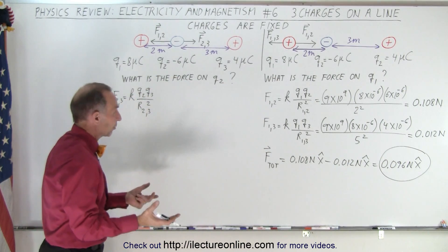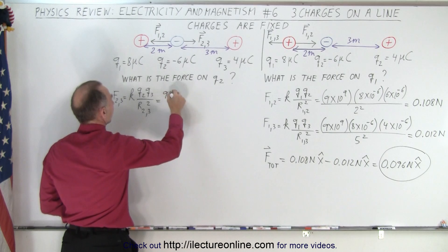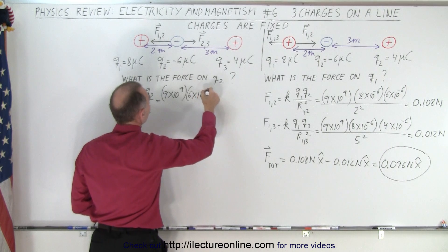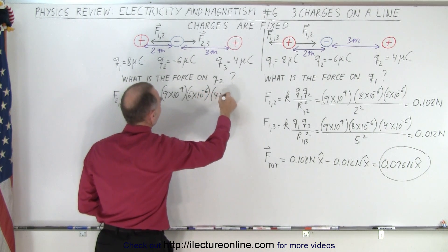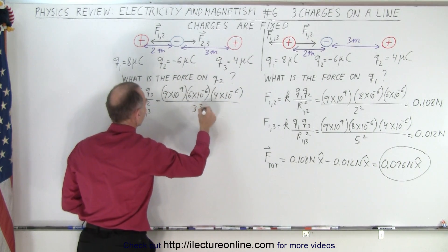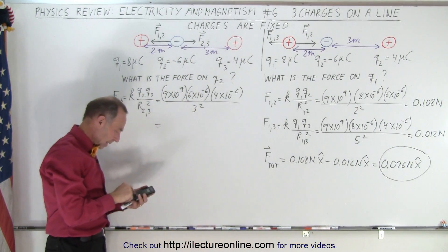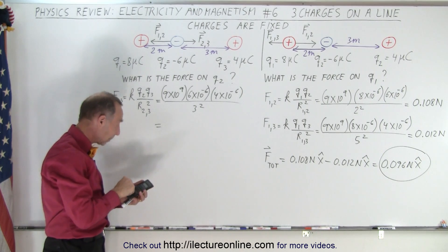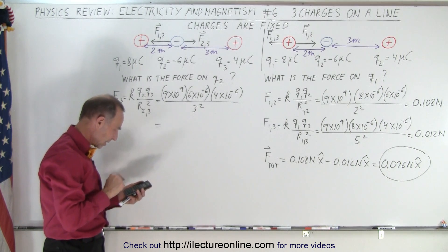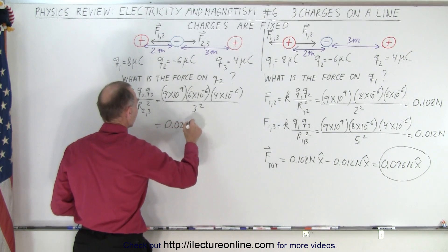So now, for comparison, we'll go ahead and work this one out as well. So we need a third magnitude here. Q2 is 6 times 10 to the minus 6, Q3 is 4 times 10 to the minus 6, divided by between 2 and 3 is 3 squared. And so that is equal to 9e to the 9 times 6e to the minus 6 times 4e to the minus 6, and divide that by 9, and we get 0.024 Newtons.